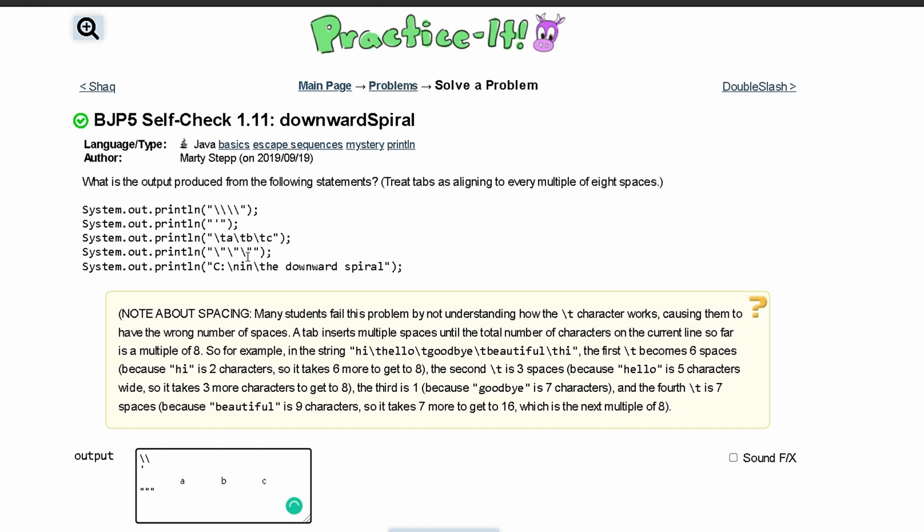Our next line we have C and then a colon, and then we have a backslash which means new line, so we create a new line. In the new line we have 'in' and then we have a slash T for tab.